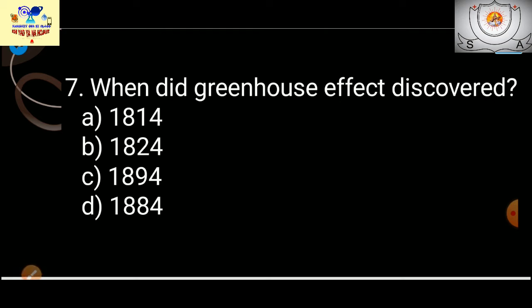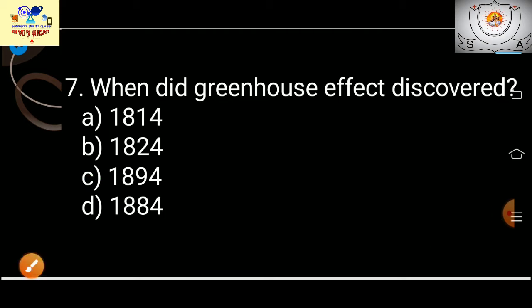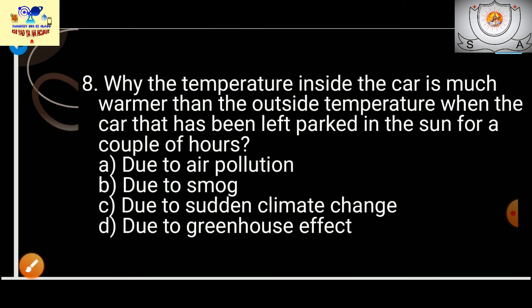Question 7: When was the greenhouse gas discovered? It was discovered in 1894 by scientist Arrhenius. You should also remember there is the Tyndall effect — after the Tyndall effect, Arrhenius gave this phenomenon.